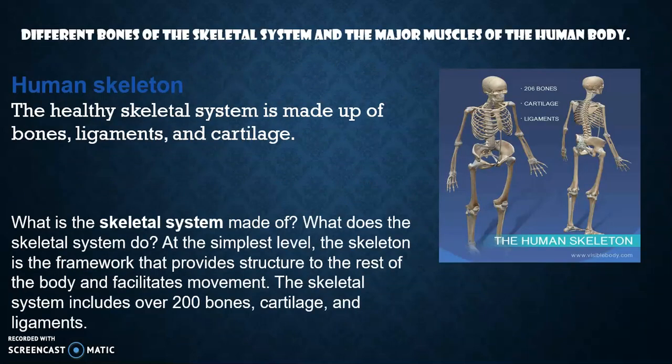Different bones of the skeletal system and the major muscles of the human body. The healthy skeletal system is made up of bones, ligaments, and cartilage. At the simplest level, the skeleton is the framework that provides structure to the rest of the body and facilitates movement. The skeletal system includes over 200 bones — specifically, 206 bones — as well as cartilage and ligaments.